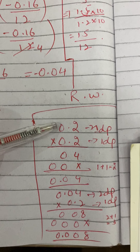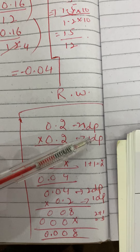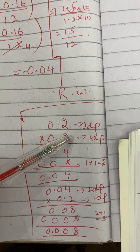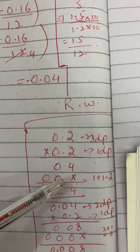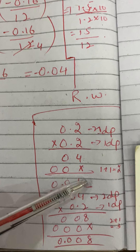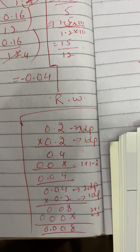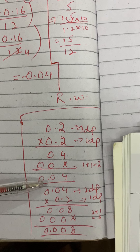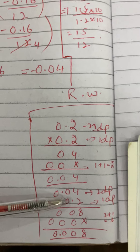This number has 1 decimal place and the other also has 1 decimal place, so we add them: 1 plus 1 equals 2 decimal places. So we put the decimal after two digits, giving 0.04. But we need to multiply 0.2 three times, so we multiply 0.04 by 0.2 again.